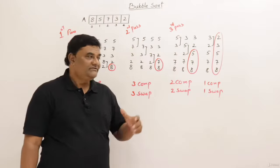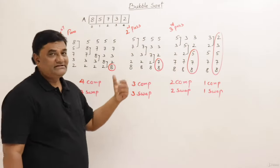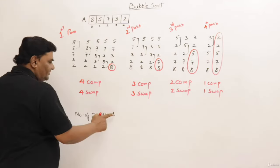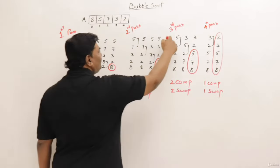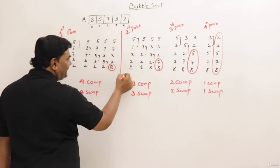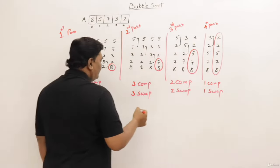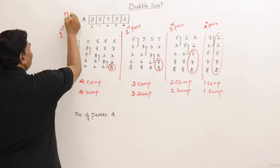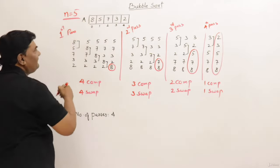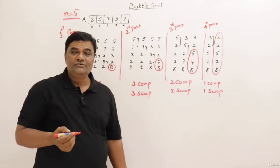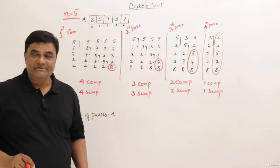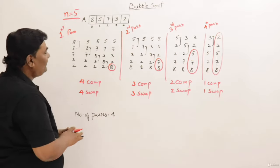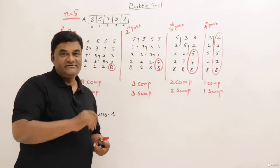This is the working of bubble sort using five elements. Now let us analyze it. How many passes were performed? Total four passes. I have five elements, so n equals five. For five elements, four passes were needed — that is n minus one passes. So for n elements, there will be n minus one passes.